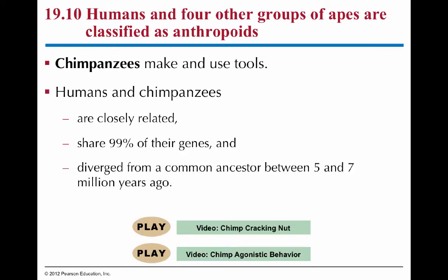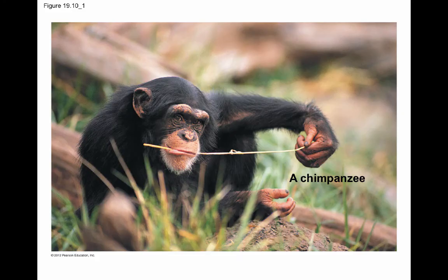Chimpanzees and bonobos are most closely related to humans — they share 99% of their genes. Of course, the 1% that is different is important and makes us very different from chimpanzees in a lot of ways. Remember, they have a common ancestor with humans, so chimpanzees and humans don't arise from each other. Chimpanzees are also good at tool use — humans are not the only ones to use tools.